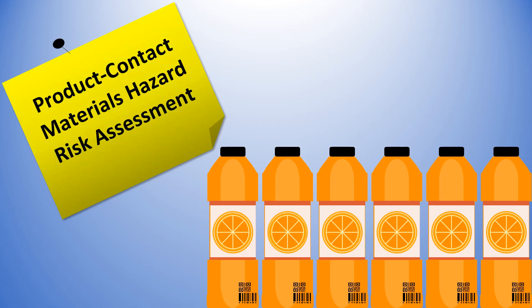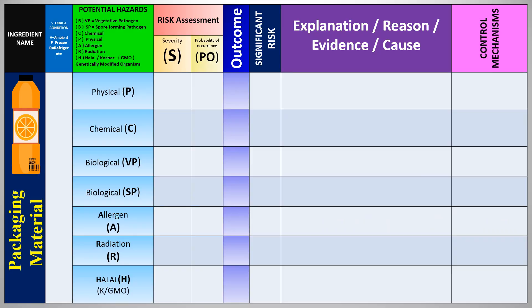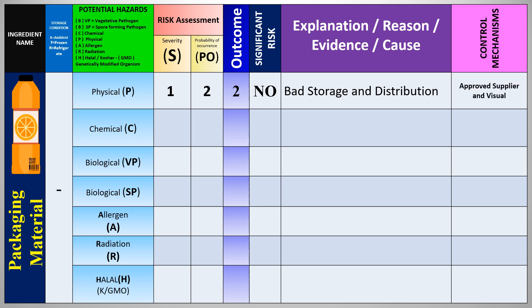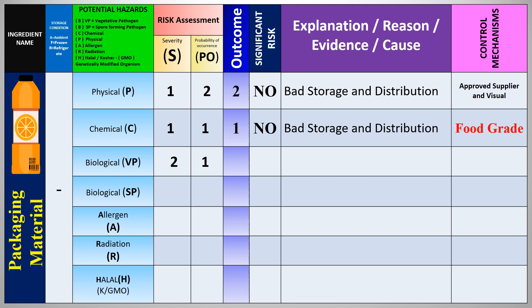Now we move to packaging materials — the bottles — as product contact materials hazard risk assessment using the same table structure. Storage temperature depends on the nature of the product being produced. Physical hazard outcome: not significant; cause is bad storage and distribution; controls are approved supplier and visual inspection during receiving. Chemical hazard is also not risky from bad storage, but the key control is ensuring bottles are from food-grade origin, since they are in direct food contact.